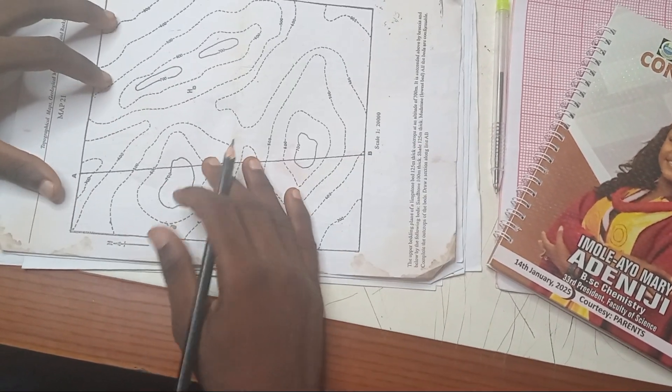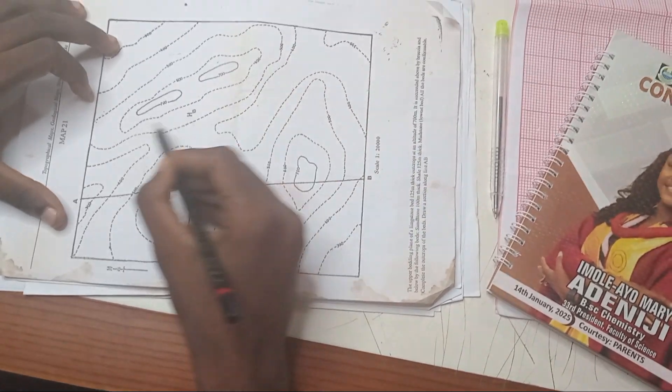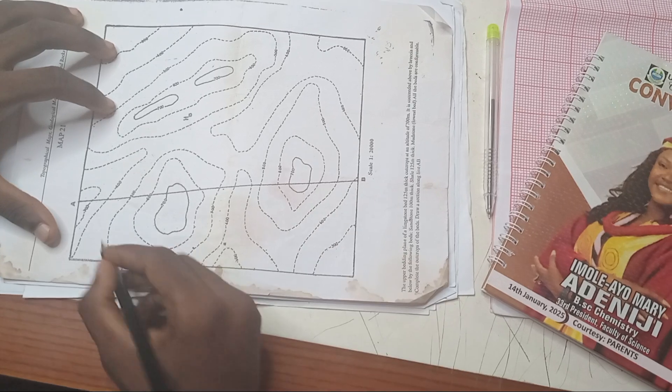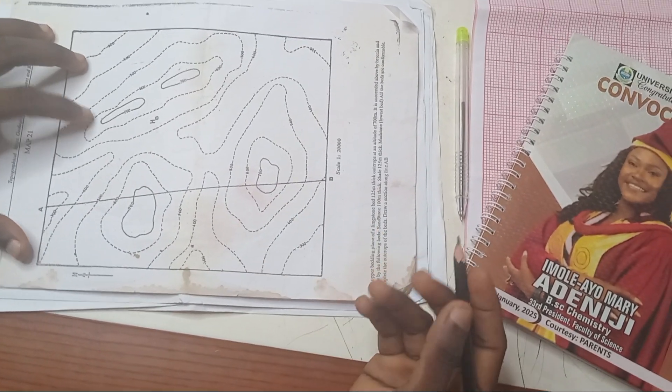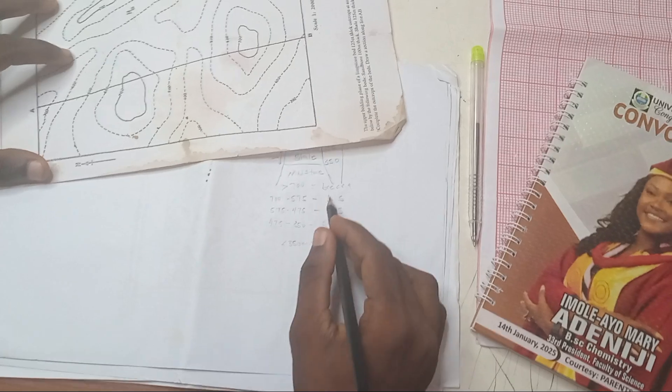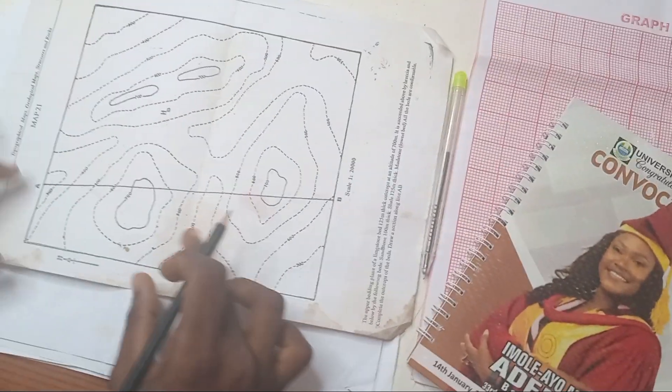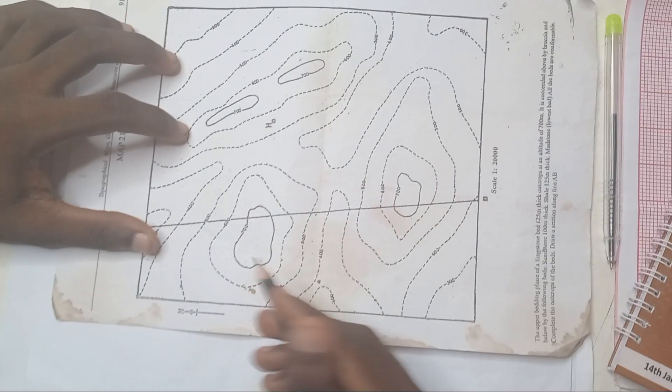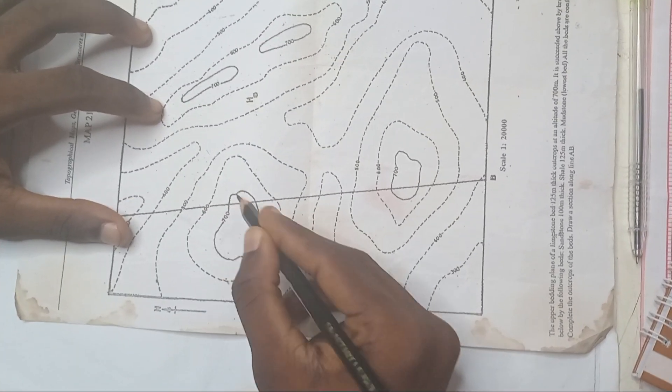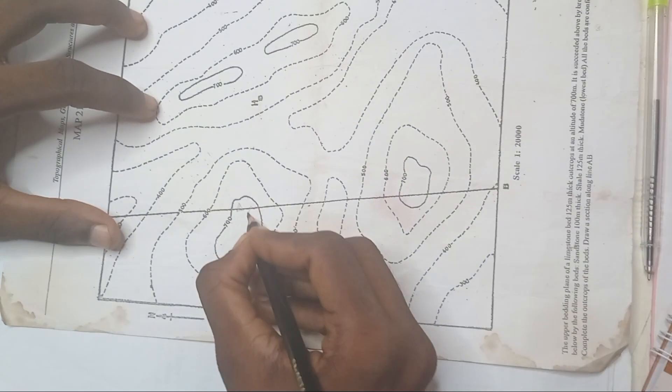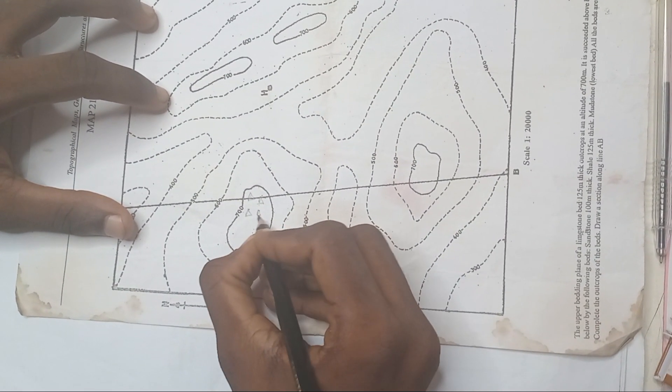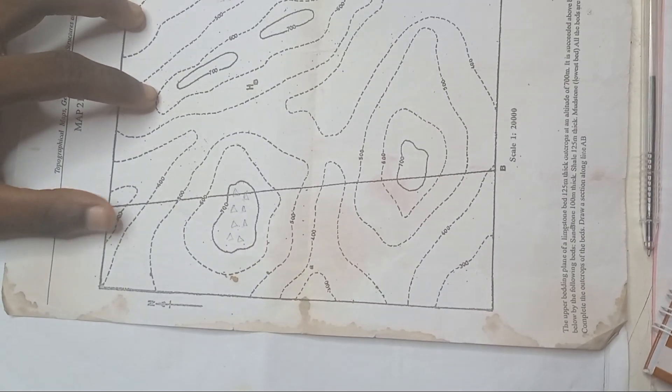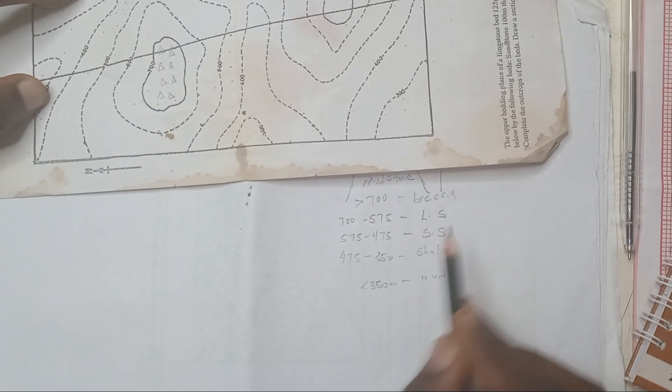Now, for you to draw the boundary, you can see these contours. Contour line shows elevations, right? It shows elevations. You can see these contours. Now I'm going to draw each of them. So I'm going to start with breccia. Let's start with this area. So breccia is above 700, which means 700 this side, upward. So we have breccia. This is the symbol for breccia. The triangulars.